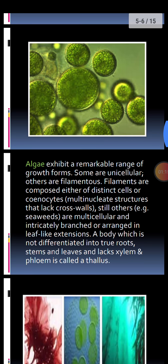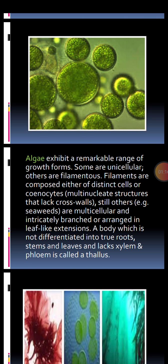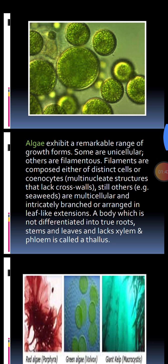Algae exhibit a remarkable range of growth forms. Some are unicellular (one-celled), others are filamentous — filament-like. Their filaments are composed either of distinct cells or coenocytes. Coenocytes are multi-nucleate structures having many nuclei that lack cross walls, meaning they have no separations. Others, like seaweeds, are found in aquatic environments.